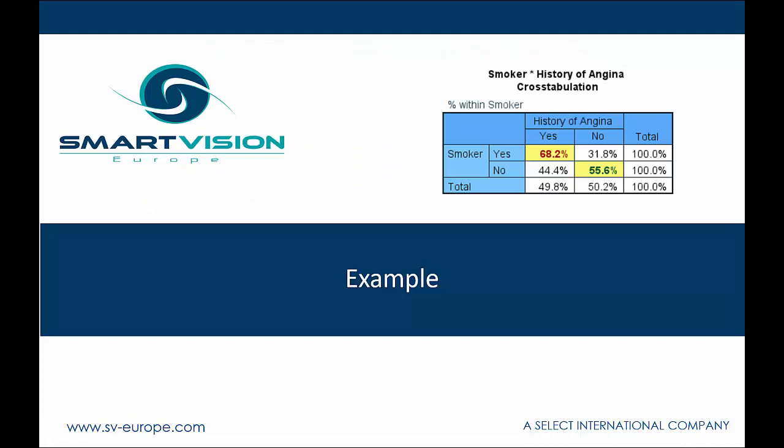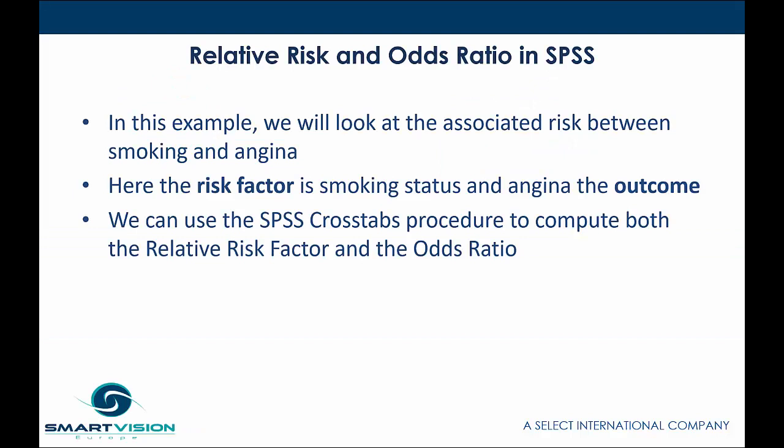Let's look at an example of how odds ratios and relative risk ratios are calculated in SPSS Statistics. In this example, we're going to look at the associated risk between smoking and angina. It's important to bear in mind which one is the risk factor and which one is the outcome. Smoking status is the risk factor and angina is the outcome. We can use the SPSS crosstabs procedure to compute both the relative risk factor and the odds ratio.